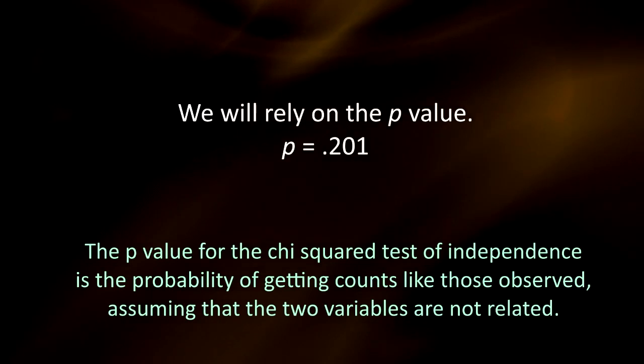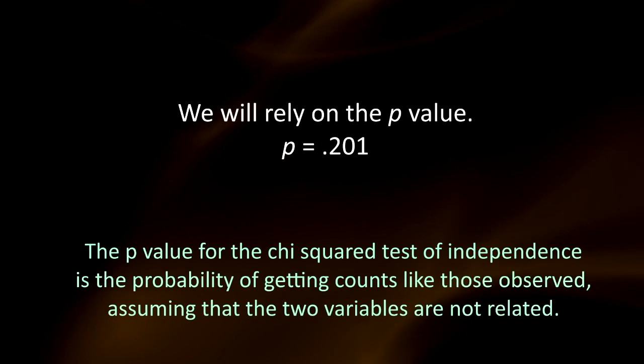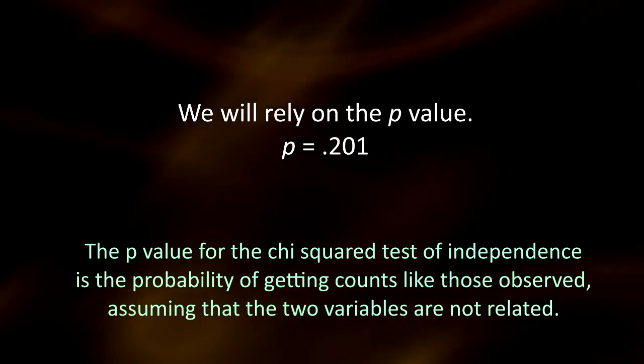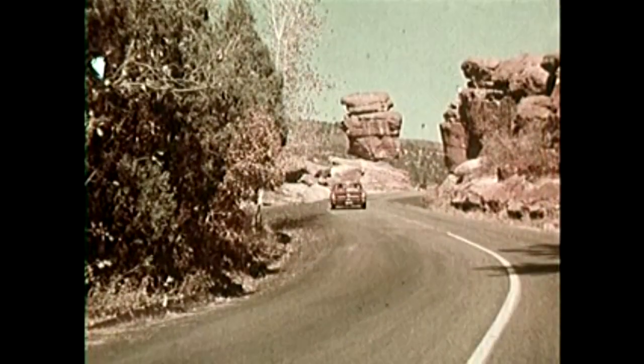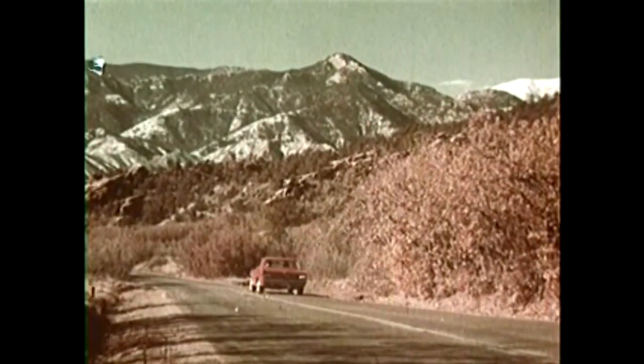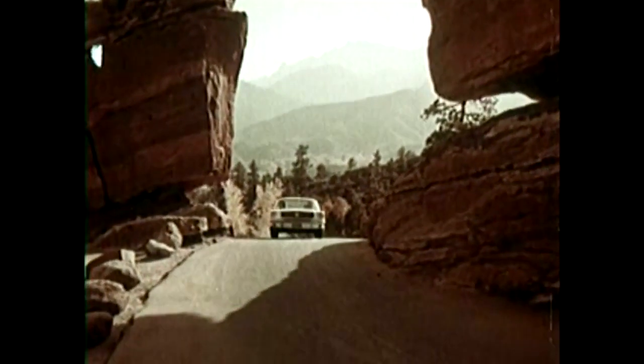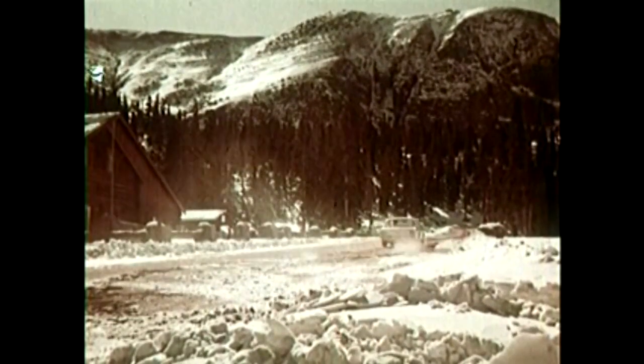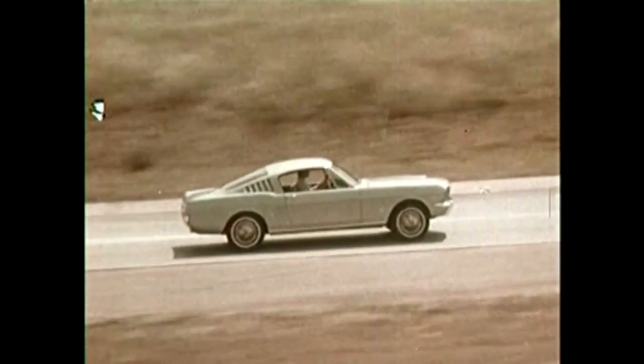The p-value of 0.201 is not small at all. There's no compelling statistical evidence to reject the null hypothesis, and so we'll continue to assume it may be true. Gender and drunk driving may be independent, and so the data suggests that a law that forbids sale of 3.2% beer to males and permits it to females is unwarranted. In fact, the Supreme Court, by a vote of 7 to 2 majority, struck down the Oklahoma law as discriminatory and unjustified.